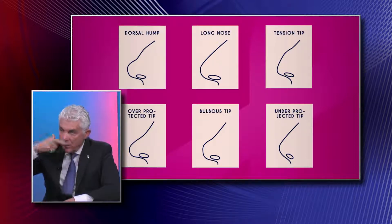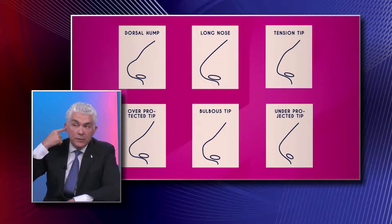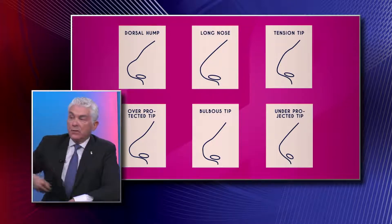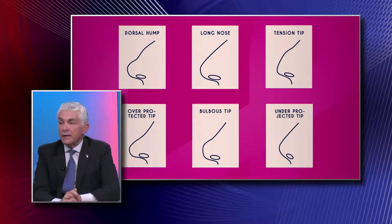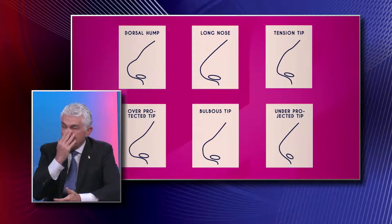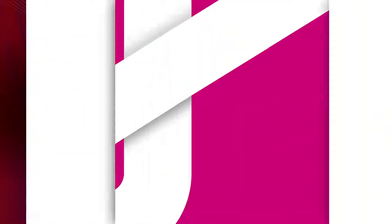You can take cartilage from the ear or from the rib. On certain occasions, when there's nothing left — such as patients who've had a cocaine overdose and completely collapsed their nose — you can use the outer plate of the bone from the skull.